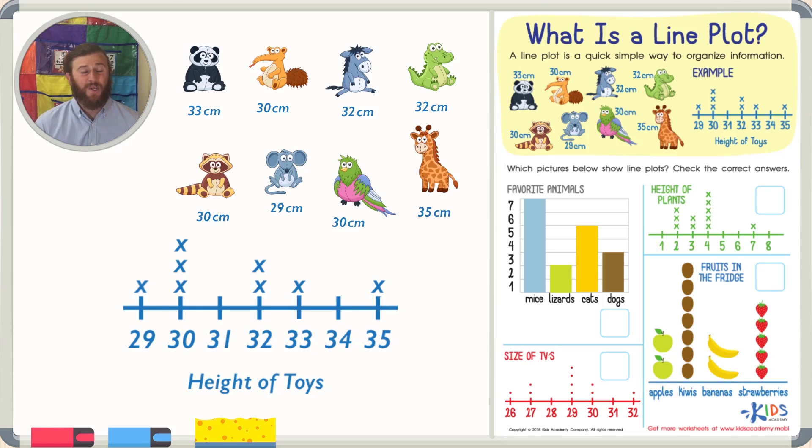Those animals are one, two, and three. Those three animals are represented by these three X's. So I hope you can begin to see that a line plot is really just a nice easy way to organize information. So based on this, can you tell me how many animals are 32 centimeters tall?